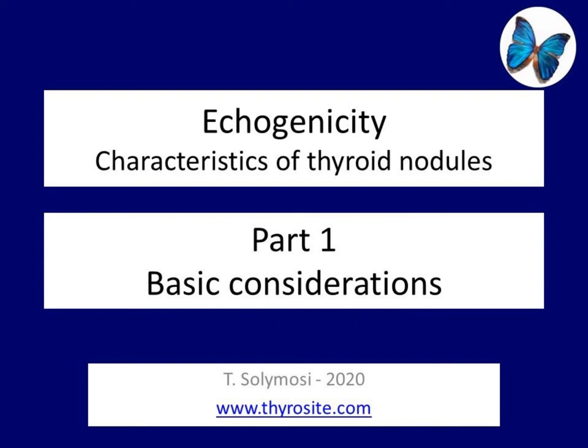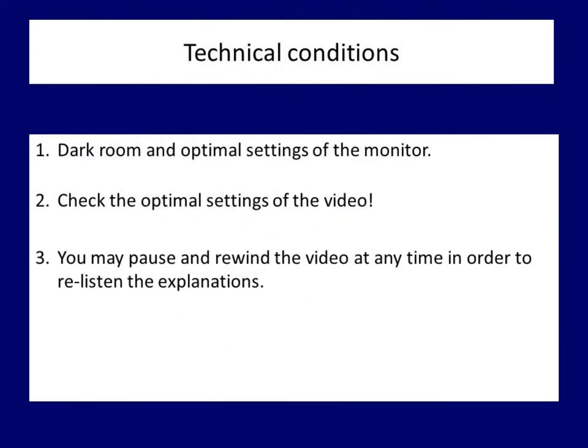Echogenicity is the most important characteristic of a thyroid nodule, which in a great proportion of cases decides the next step in the evaluation of thyroid patients. The difference in echogenicity is based on visual judgment on gray scale levels, therefore it is crucial to watch this lecture in a dark room and on a proper monitor, similarly to a real-world ultrasound examination.